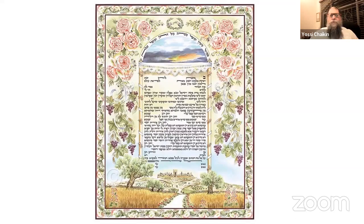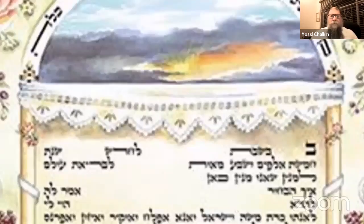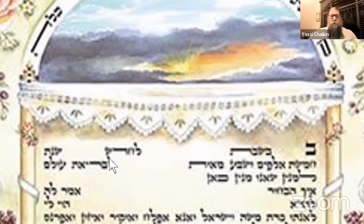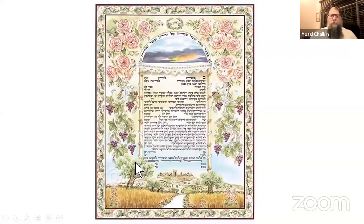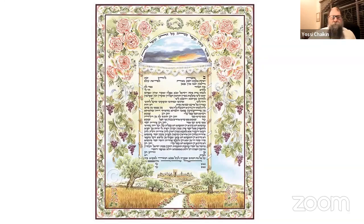To illustrate this, consider a ketubah. On a ketubah there is a date, and when you mention a day of the week and a day of the month, you use the word 'chodesh.' The ketubah, of course, is a marriage document, and most of us on this Zoom have a ketubah — and it uses the term 'chodesh,' which is the term normally used in Torah format.